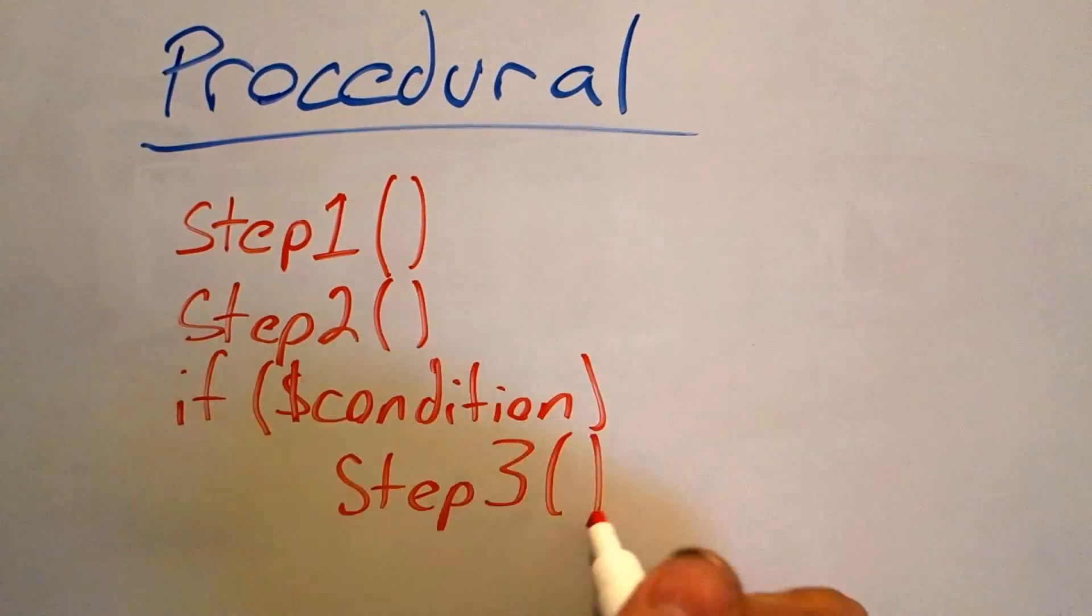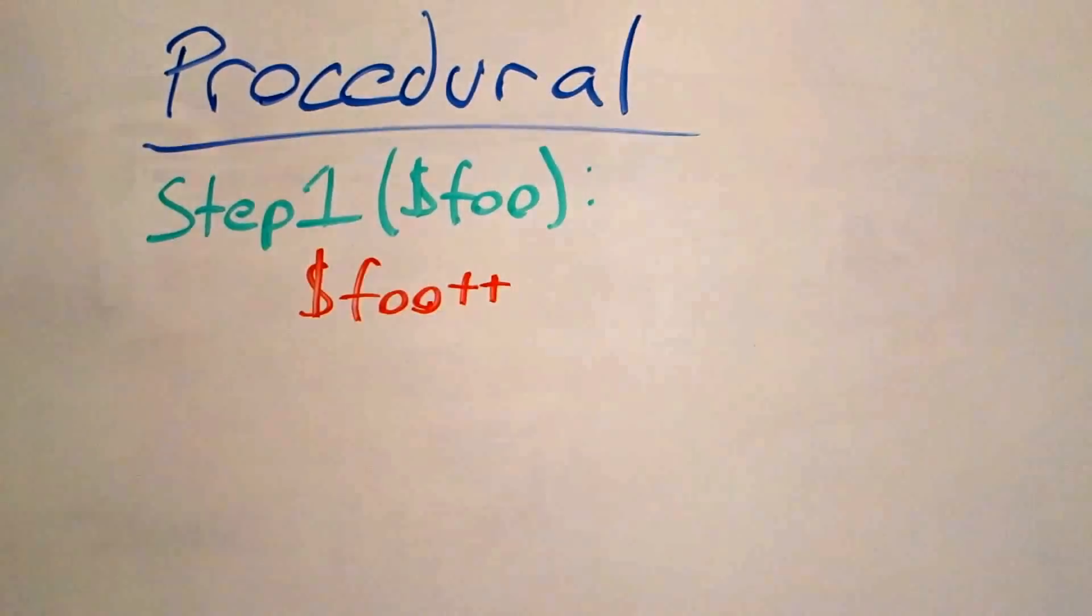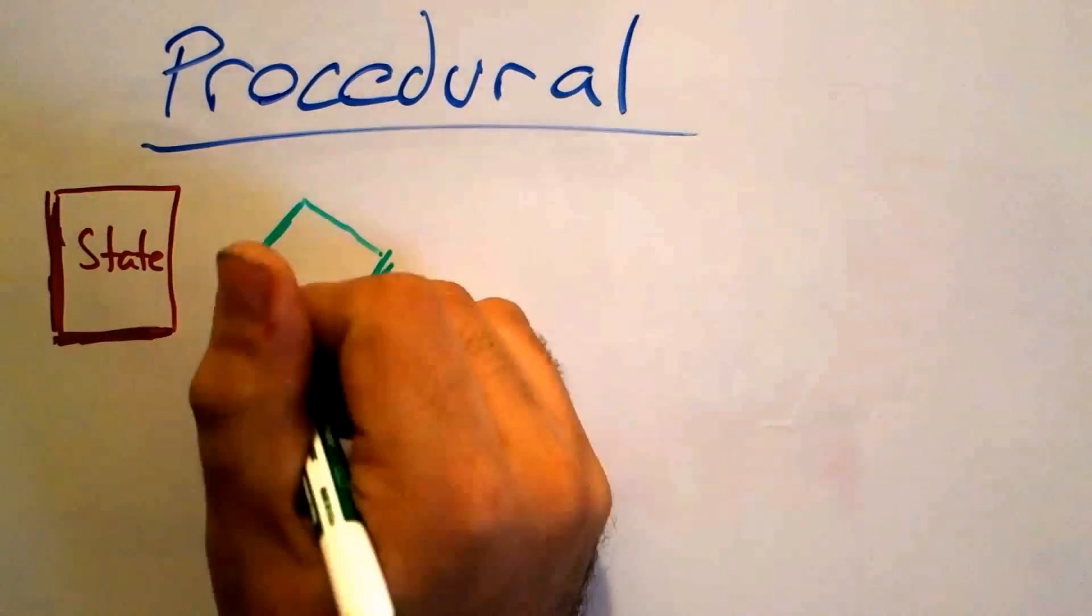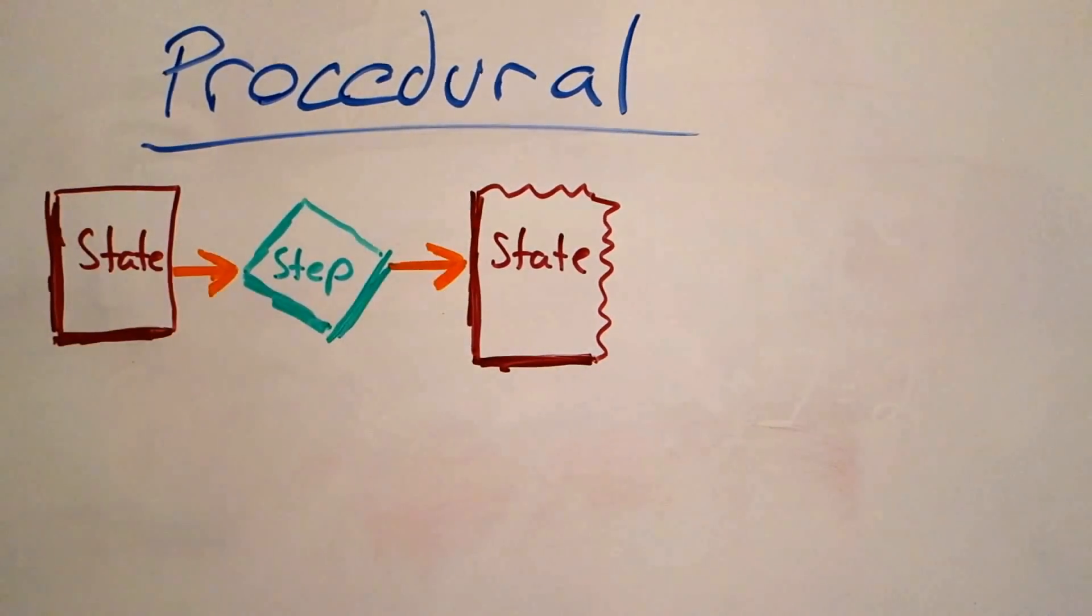Let's look at procedural code. Each statement is simply a step to be executed, with each step manipulating state. State and the actions manipulating it are completely separate.